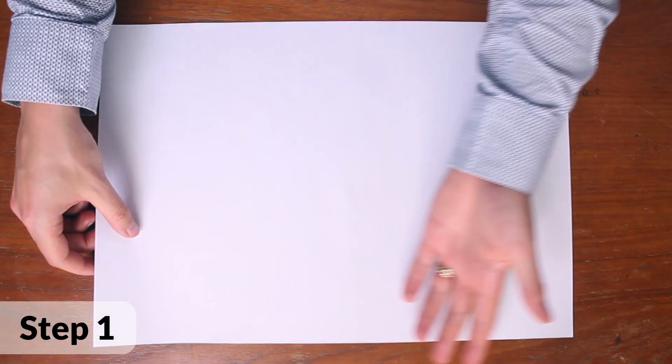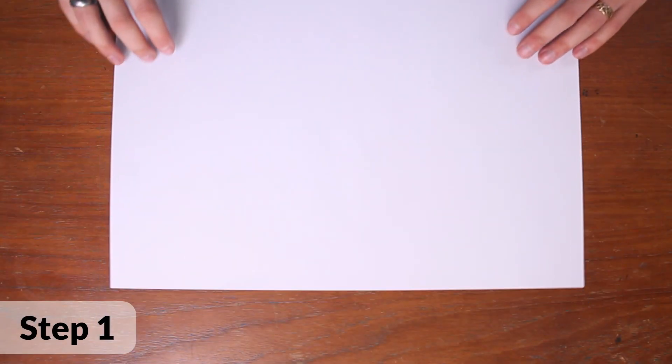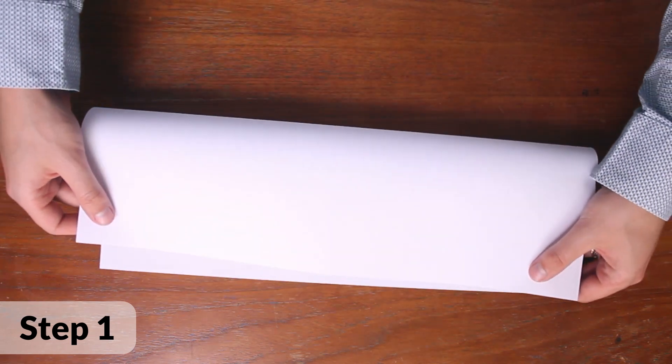First take a blank A3 piece of paper and fold it in half lengthways so it makes a long skinny rectangle.